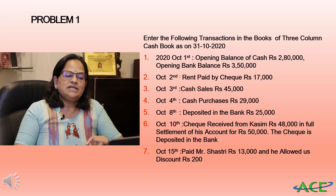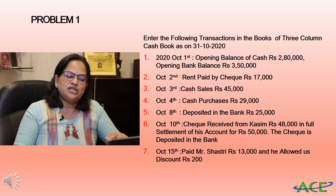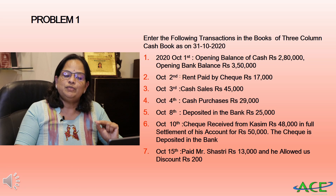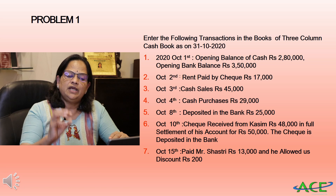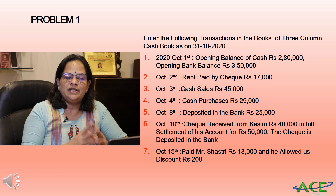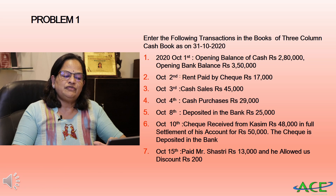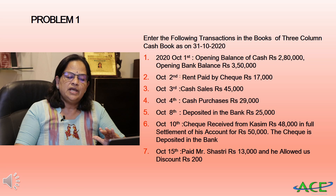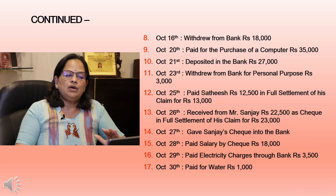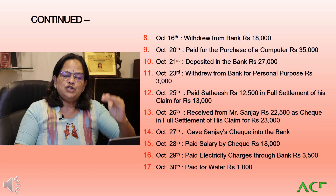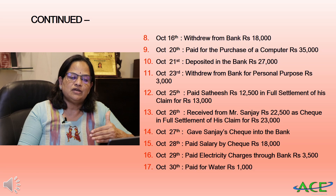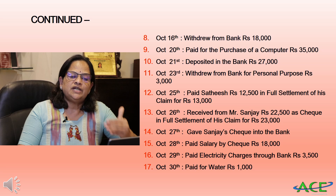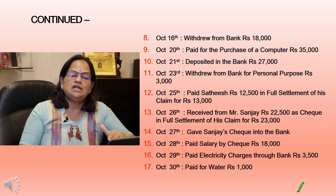October 10th: check received from Kasim rupees 48,000 in full settlement of his account for rupees 50,000 — since 50,000 is the amount due and he is accepting 48,000, the discount is rupees 2,000. The check is deposited in the bank. October 15th: paid Mr. Shastri rupees 13,800; he allowed us a discount of rupees 200. October 16th: withdrew from bank rupees 18,000. October 20th: paid for purchase of a computer rupees 35,000.